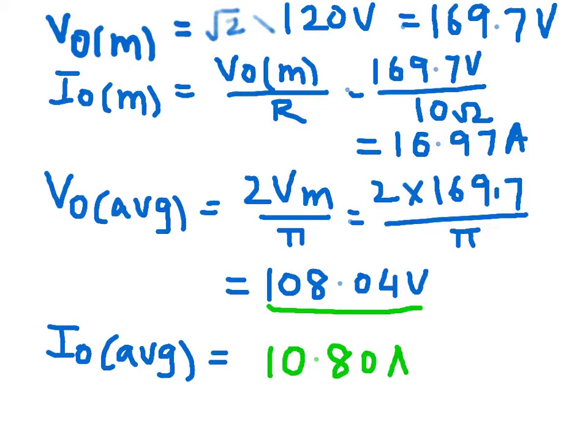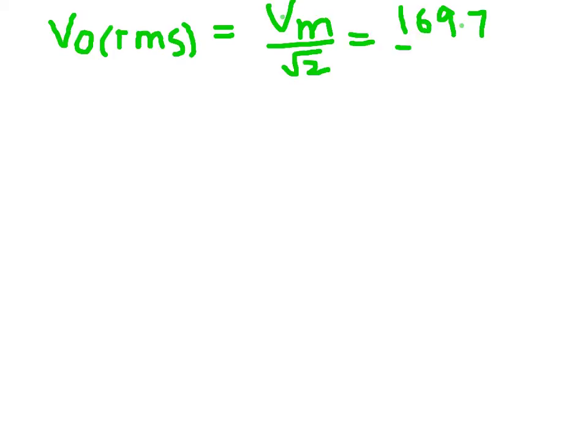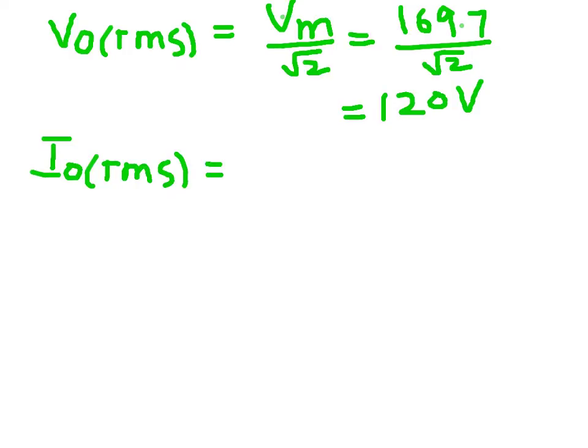Now we're finding RMS values. V_o RMS is given by V_m over √2, which is 169.7 divided by √2, giving you 120 volts—basically the RMS value of the supply, and the same voltage appears across the load. For the RMS value of current, divide 120 by 10, which gives you 12 amperes.